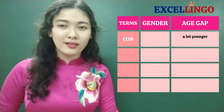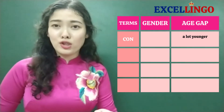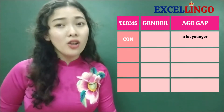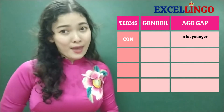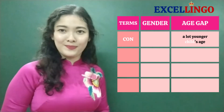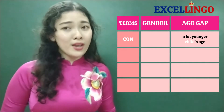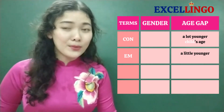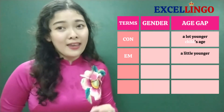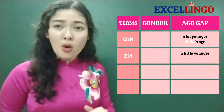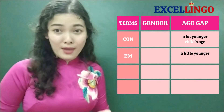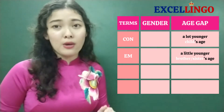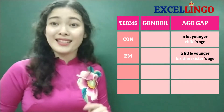We call someone 'con' when he or she is a lot younger than us — they are about the same age as our child. We call someone 'em' when he or she is quite younger than us — they are about the same age as our younger brother or younger sister.